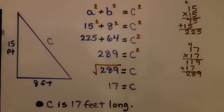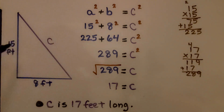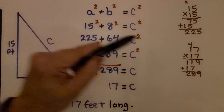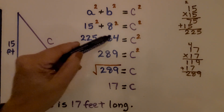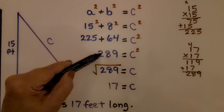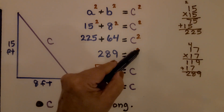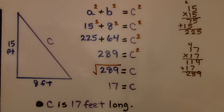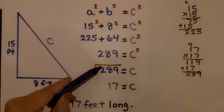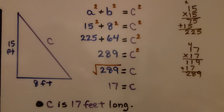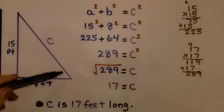Here we have a triangle with sides of 15 feet and 8 feet, and we need to find c. Substituting into the formula: 15² + 8² = c². 15 × 15 = 225, 8 × 8 = 64. Adding them gives 289 = c². We take the square root of both sides. Since 17 × 17 = 289, c = 17, so the hypotenuse is 17 feet long.